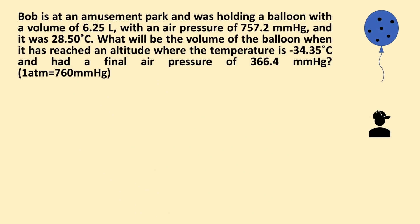Let's do an example using the ideal gas law to solve the following problem. Bob is at an amusement park and was holding a balloon with a volume of 6.25 liters, an air pressure of 757.2 millimeters of mercury, and a temperature of 28.50 degrees Celsius. Bob releases the balloon into the air and immediately regrets doing so because he gets in trouble for littering and destroying the environment. What will be the volume of the balloon when it has reached an altitude where the temperature is negative 34.35 degrees Celsius and the final air pressure is 366.4 millimeters of mercury? Take a moment to write down the ideal gas law and identify the initial and final variables.